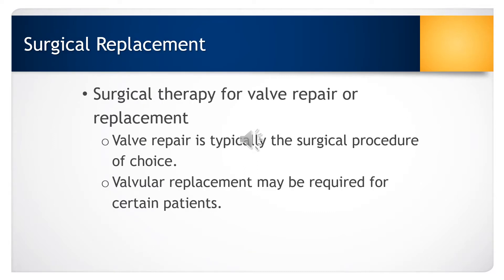Valve repair is usually the surgical procedure of choice. It has a lower operative mortality rate than valve replacement and is often used in mitral and tricuspid valvular disease. Valve replacement may be required for mitral, aortic, tricuspid, and occasionally pulmonic valve disease. The surgical treatment of choice for combined aortic stenosis and aortic regurgitation is valve replacement.